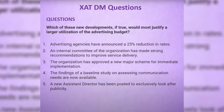Option 3 — the organization has approved a new major scheme for immediate implementation. This makes a lot of sense. The associate director's argument was that all existing programs are already widely known. If there's a new scheme, that argument is weakened because now there is something new to publicize and more budget can be justified. Option 4 — findings of a baseline study on communication needs are now available — we don't know what the findings state, so it goes out. Option 5 — a new assistant director has been posted to look after publicity — even so, the previous argument is not nullified; you have to address the reasoning. So the correct answer is Option 3.